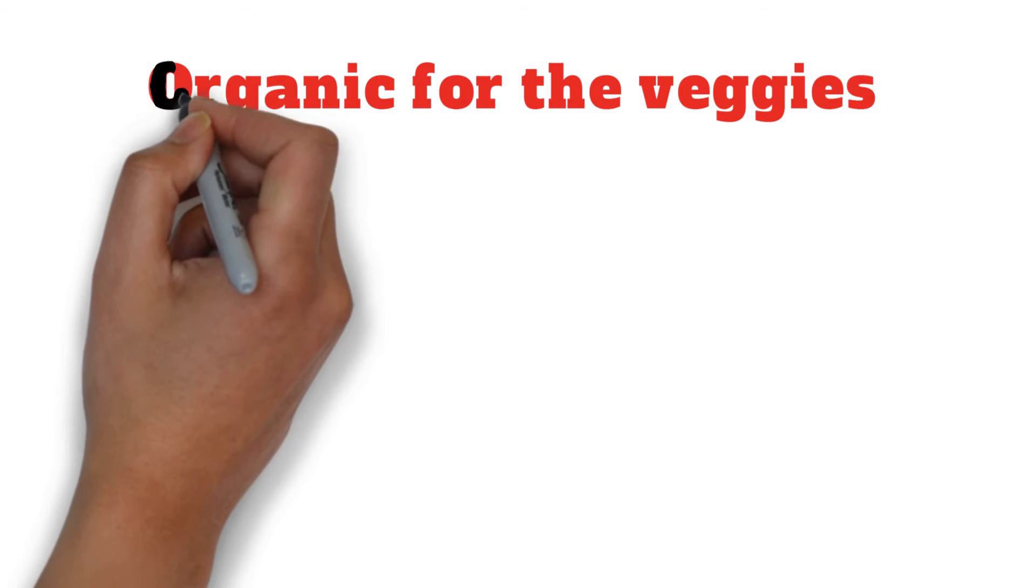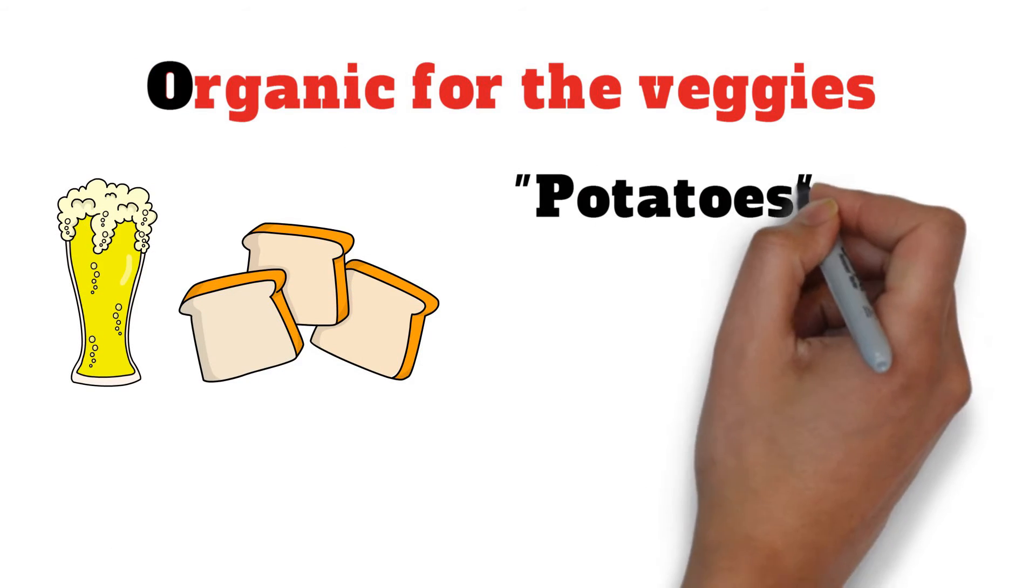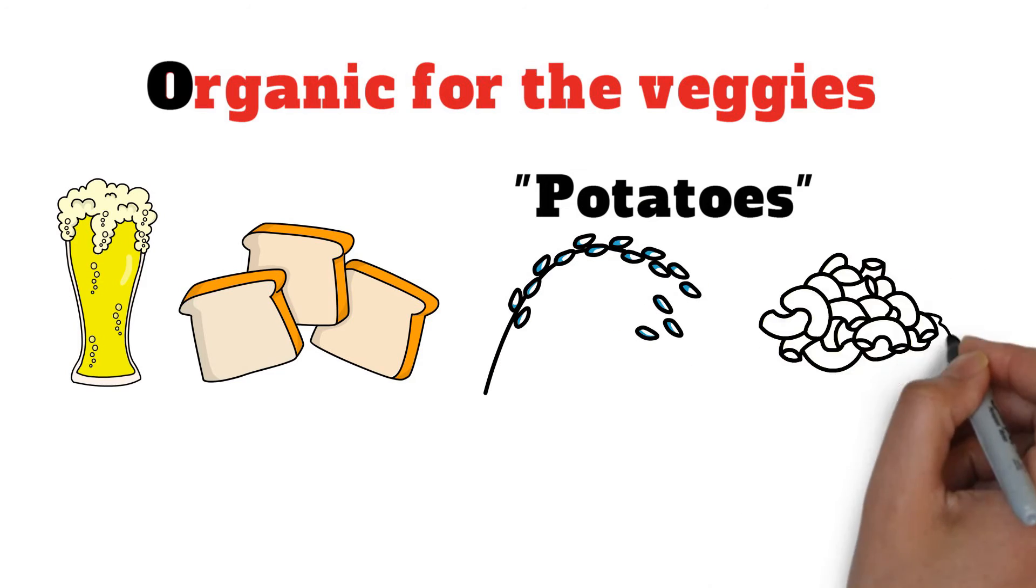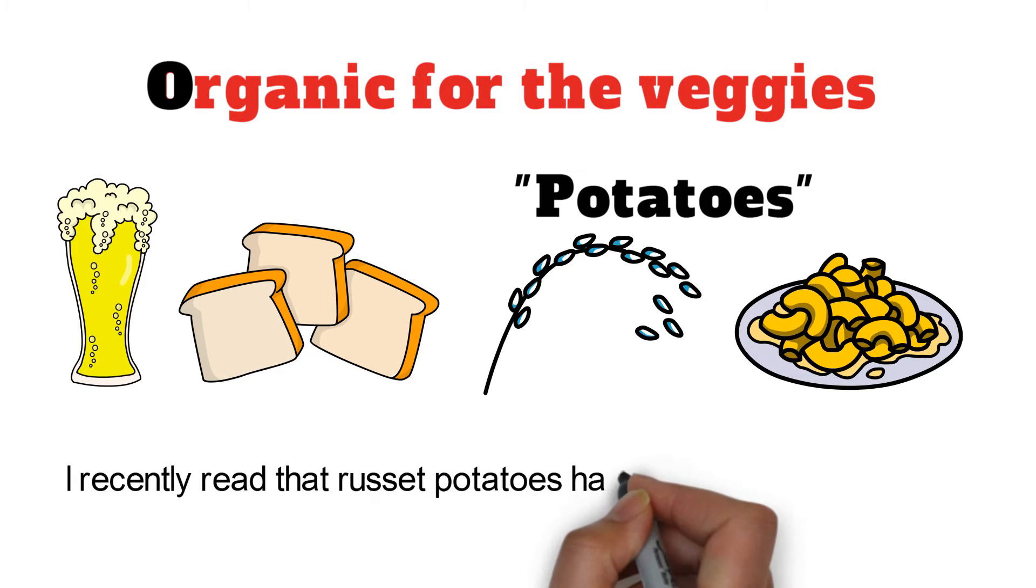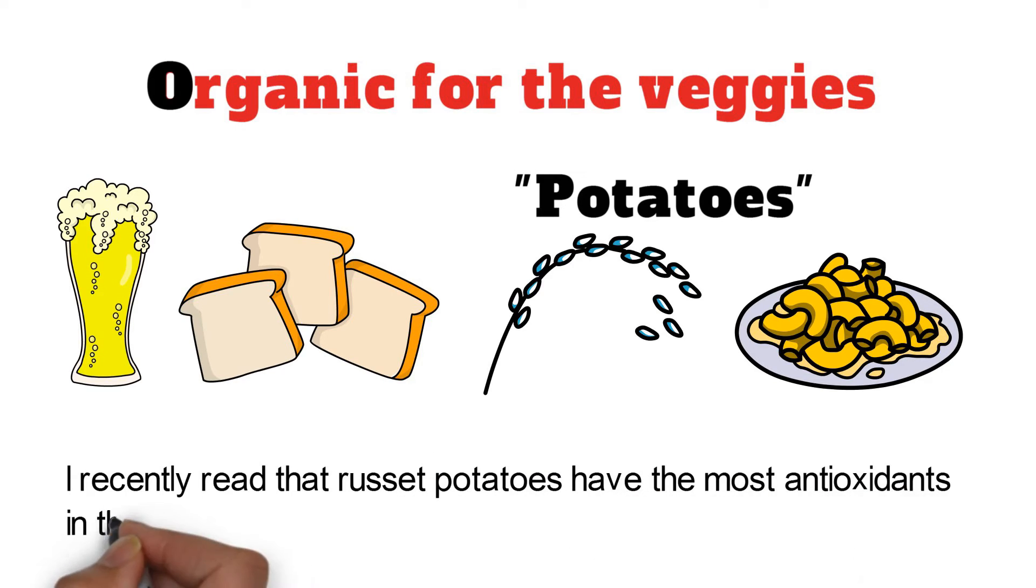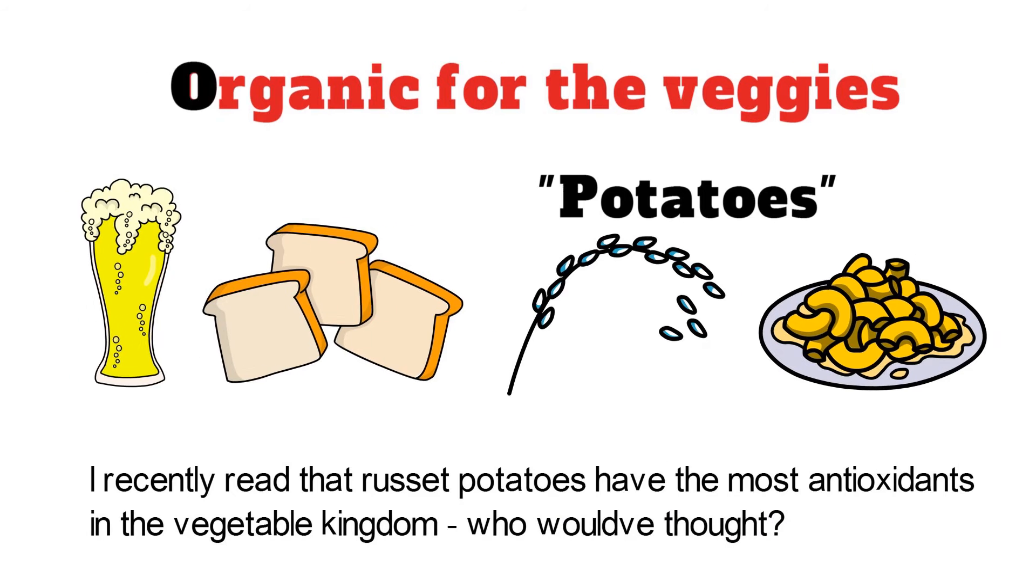Organic for the veggies, and I like to emphasize beer and bread. Of course, this is the potatoes portion of the diet, and starches such as rice and pasta can be substituted. And here's just a small footnote: I recently read that russet potatoes have the most antioxidants in the vegetable kingdom. Who would have thought? The bold D on your screen stands for dairy.